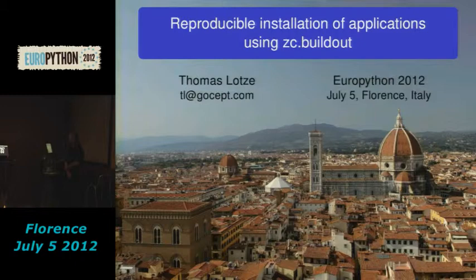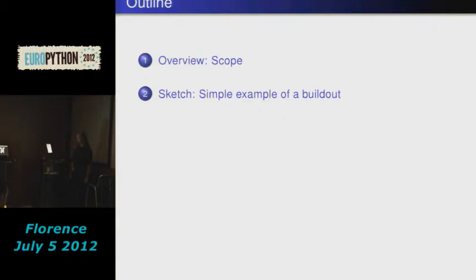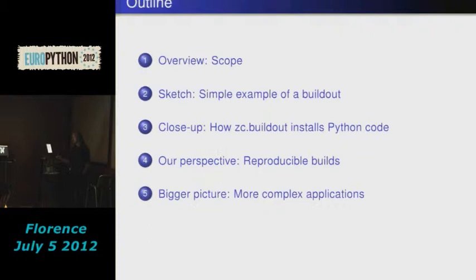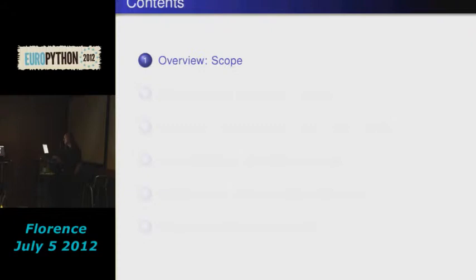Welcome to my talk about reproducing the installation of applications using zc.buildout. My name is Thomas Lotzer. I'm working for Gosept, a web application company from Germany with a strong background in Python, and we're using Buildout on a daily basis. After a short overview, I'm going to show you a simple example of a Buildout, how to use it and what it gives you. I will look at how Buildout installs Python code and how Buildout makes reproducible builds possible. Buildout can install complex applications using any software, and in the end I will give a short outlook on Buildout's future.